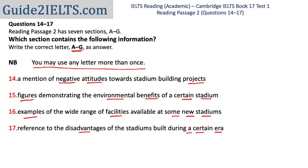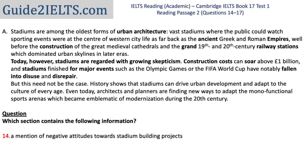At the end of this video, I'll discuss how to use all this information about different question types to decide which question type to do first. Almost always, matching information is the question type I choose to do last, because having done the other question types for any passage, I become familiar with at least some parts of the passage and this becomes easier. Let's start with the 14th question: 'A mention of negative attitudes towards stadium building projects.' Negative attitudes means negative feelings or behavior towards something. With this in mind, I start scanning section A. On your screen, some parts of section A are in bold.